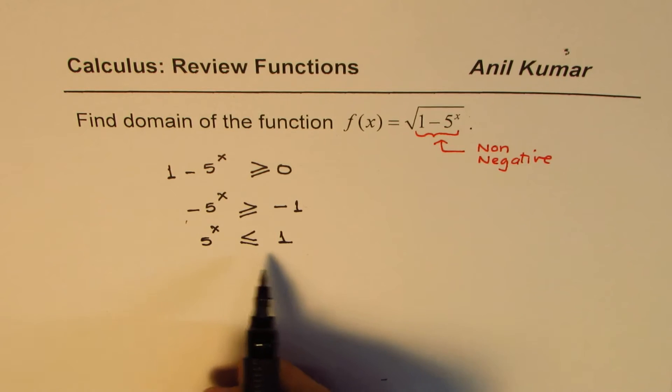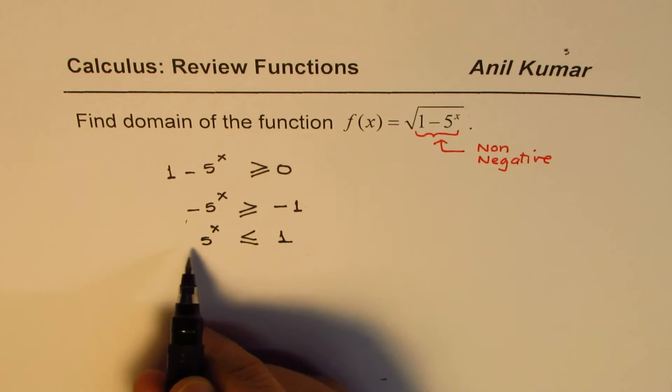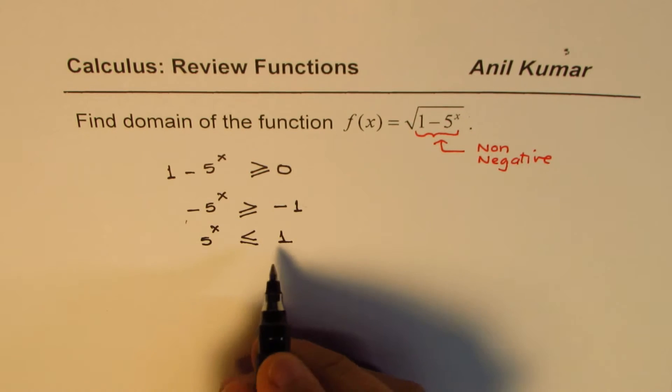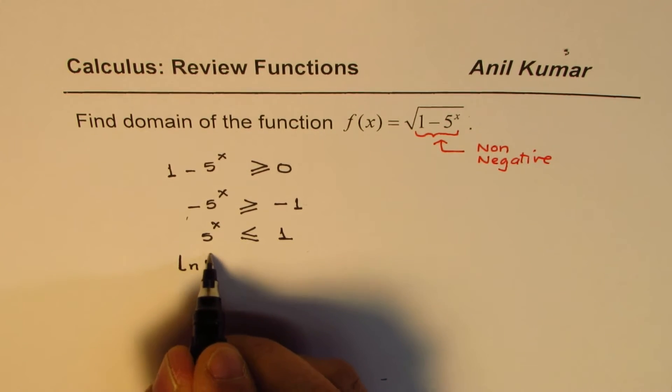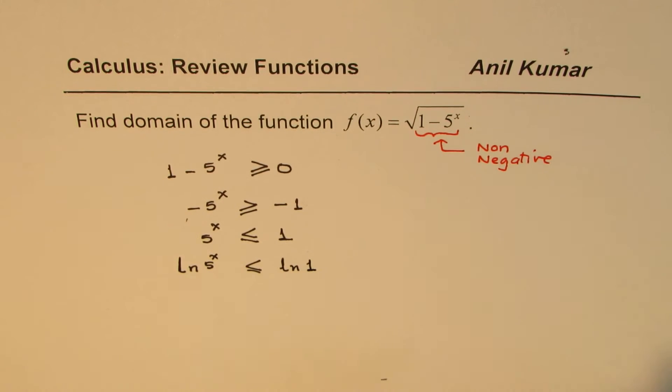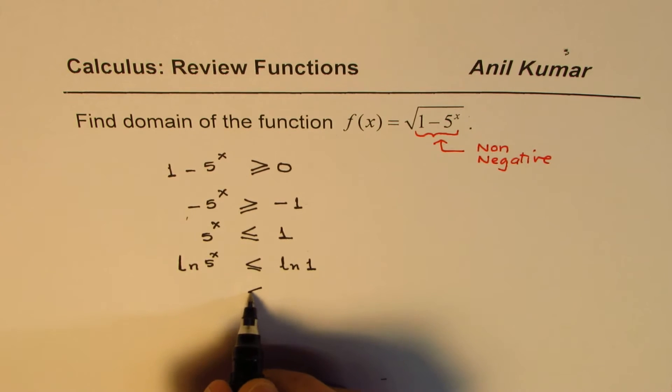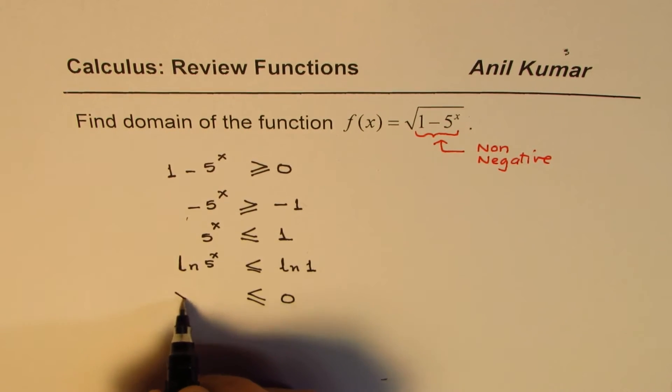And that's the best way to solve. You can take log to the base 10 or ln natural log to the base e. We normally prefer to work with ln in such cases, so let's take log, which is ln 5^x on both sides. So you get ln 1, log of 1 is 0, right? So it is 0, and that gives you x ln 5.